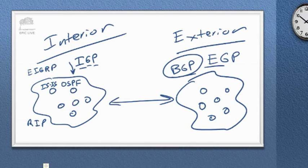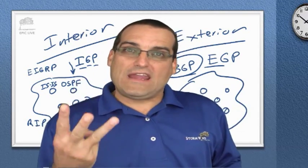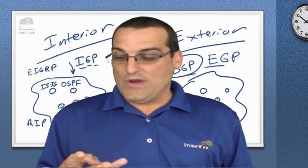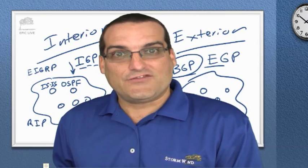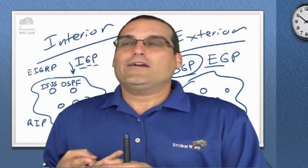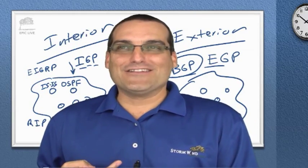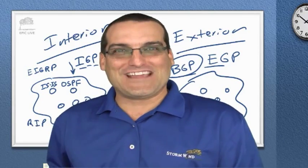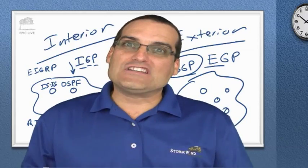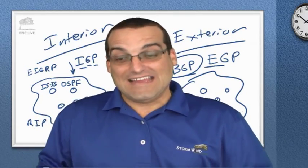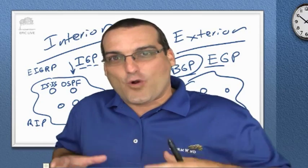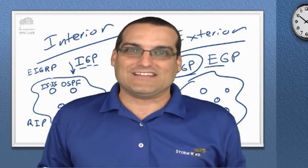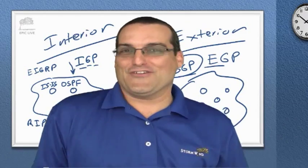There you have a review of three major classification areas for routing protocols: first, classless versus classful; second, distance vector versus link state versus hybrid; and third, interior versus exterior — whether it routes inside your corporate boundary or between corporate boundaries.